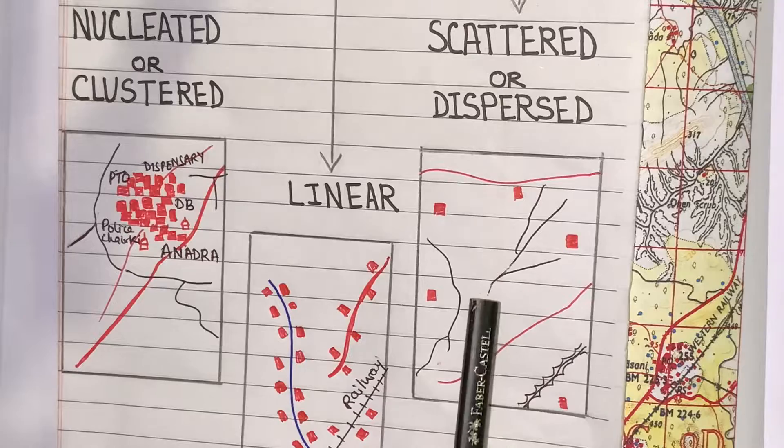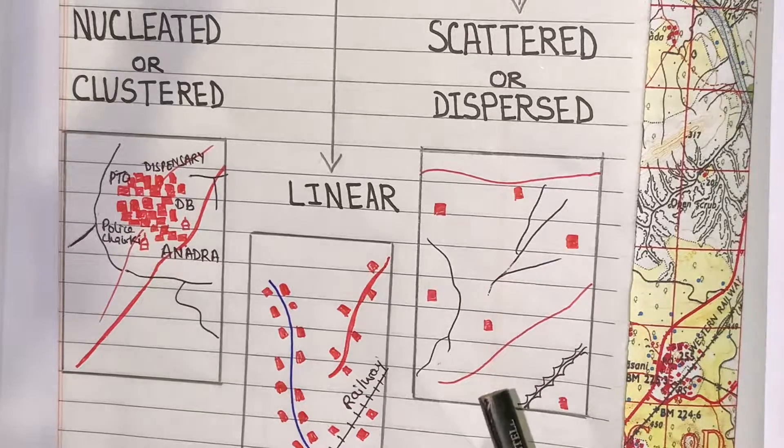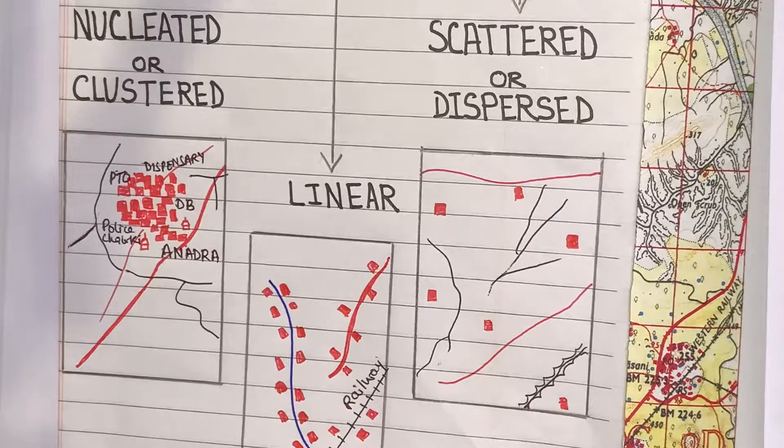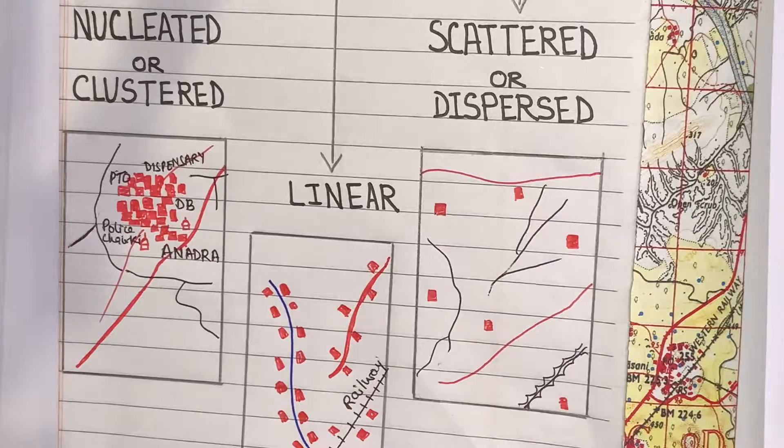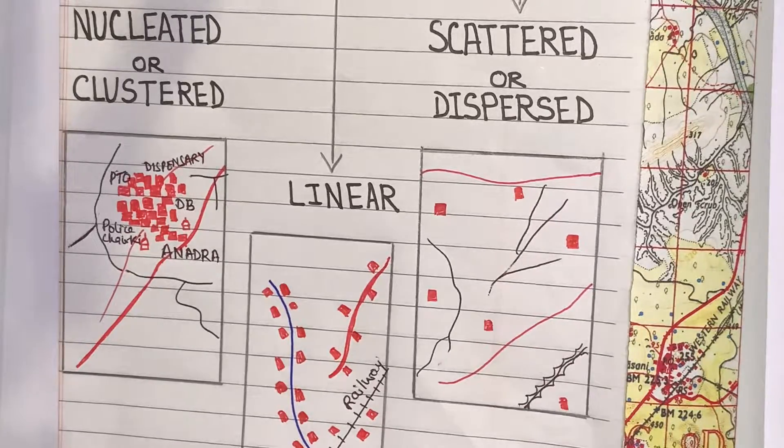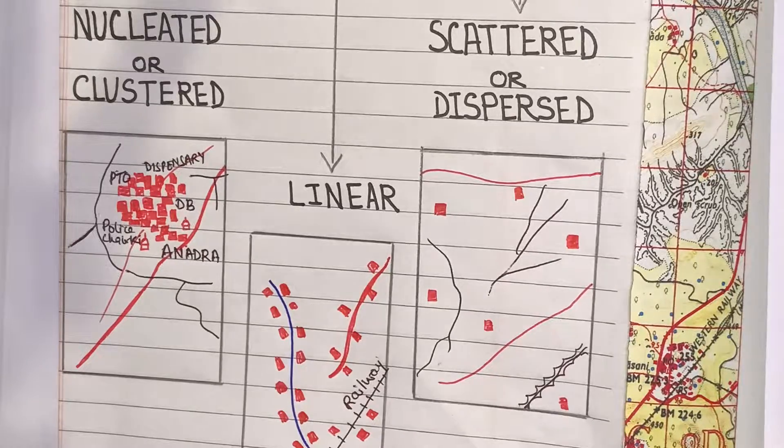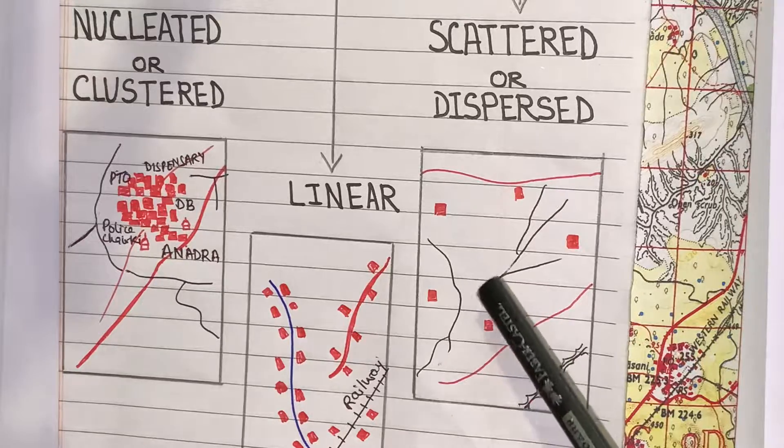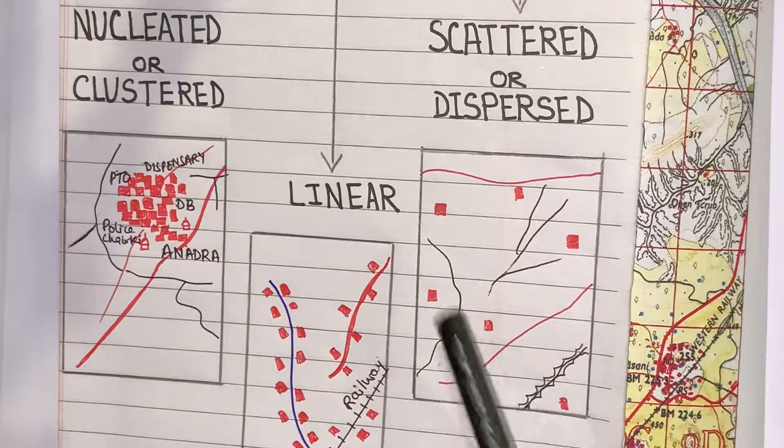Now, this settlement developed in the area which is uncultivable land, bad land, or you can see this in the deserted area or on the slopes of the hills. Because facilities are not available, so people do not stay there. So, very few huts you will find.